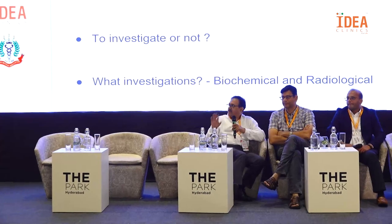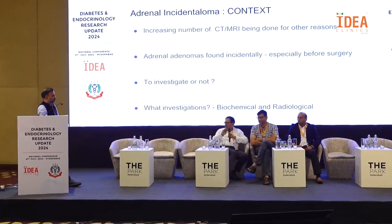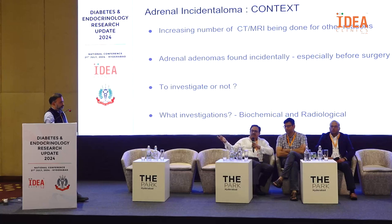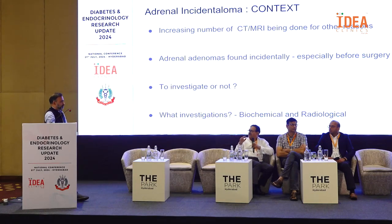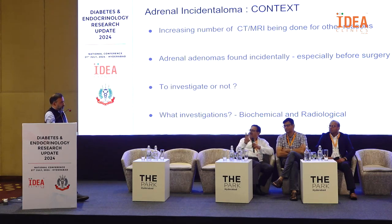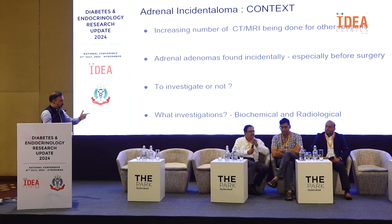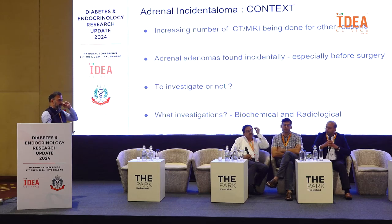For functionality, check for subclinical hypercortisolism using dexamethasone suppression tests. Aldosteronomas are usually very small — less than one centimeter — and can be identified clinically. Bilateral adrenal lesions may suggest metastasis, lymphoma, or macronodular hyperplasia. Do we need to investigate all adrenal incidentalomas? Yes — assess size, washout, and functional status. For Cushing's: do an overnight dexamethasone suppression test. For hypertension with hypokalemia: do renin-aldosterone ratio for primary hyperaldosteronism. For hypertensive crises: check serum or urine metanephrines for pheochromocytoma. For a virilized female: check sex hormones.